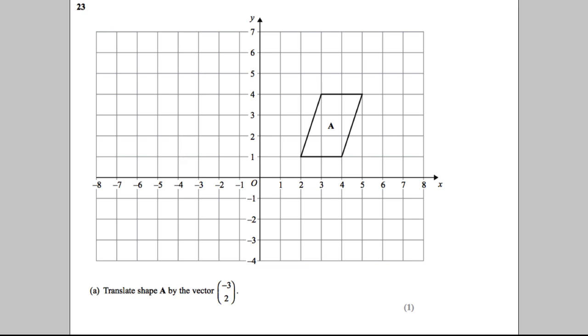Question 23 asks us to translate the shape by the vector (-3, 2). Remember, the top number tells you to go right or left, and the bottom number tells you to go up or down. So negative 3 tells us 3 left, and 2 tells us 2 up.